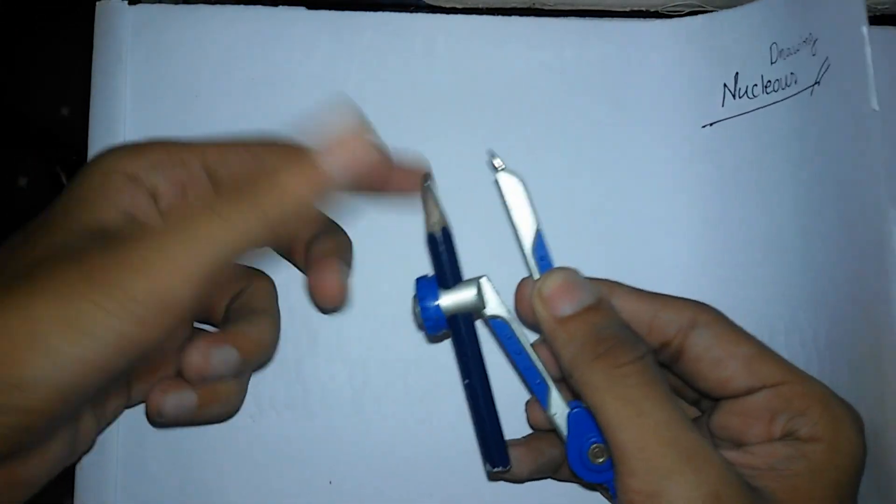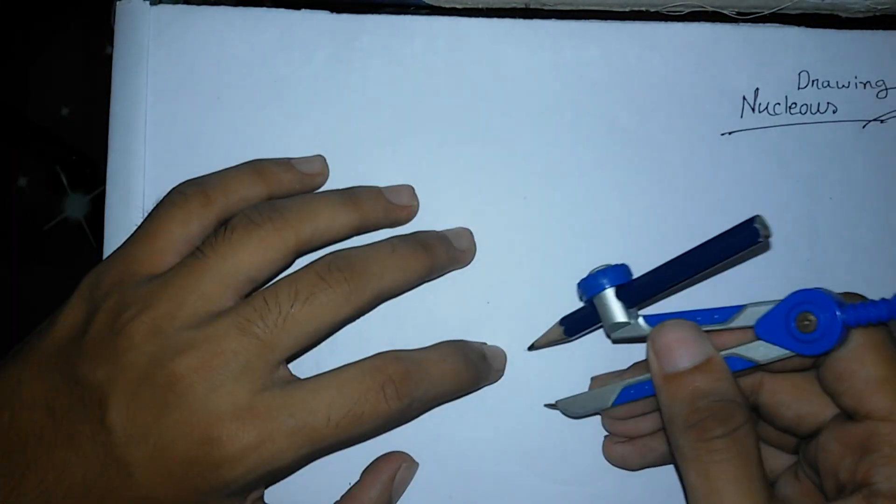In order to draw the nucleus, you need to take a compass with an attached pencil. First set the compass, then add a point on the page where you want the center. I'll give the point here.